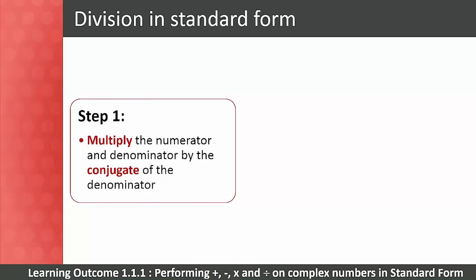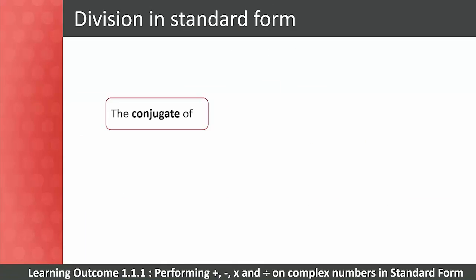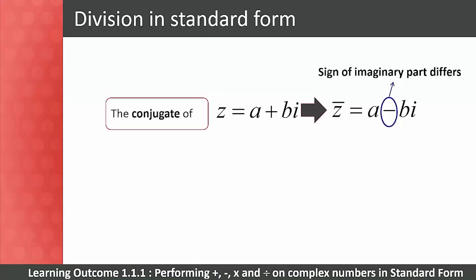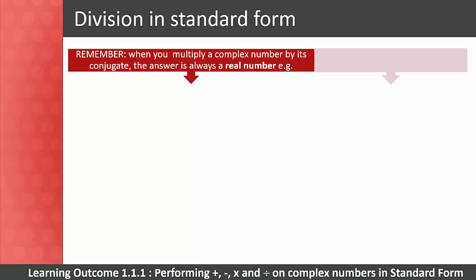Let's now move on to division in standard form. To divide complex numbers, we follow these steps. Step 1: multiply the numerator and the denominator by the conjugate of the denominator. Step 2: simplify our answer. Remember that the conjugate of a complex number differs only in the sign of the imaginary part. For example: 4 + 5i becomes 4 − 5i; −2 − 2i becomes −2 + 2i; √2 + i becomes √2 − i.